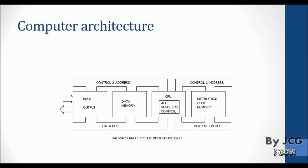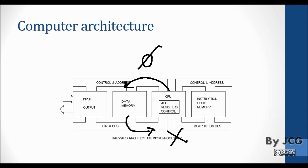Let's see a demo of how this works. For instance, if I want to access address zero of my data memory, I have to write a zero through this bus, which is called the control and address bus. With that I'm telling the microcontroller to give me the information stored at address zero, and the microcontroller is going to respond with whatever is stored there, which I'm calling x.